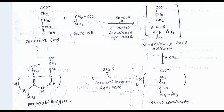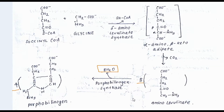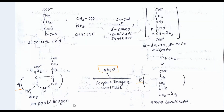Scaling up the reaction: eight molecules of ALA are required to produce four molecules of porphobilinogen. Since each step requires liberation of two molecules of H₂O, for four molecules of porphobilinogen, eight molecules of H₂O are liberated in total.